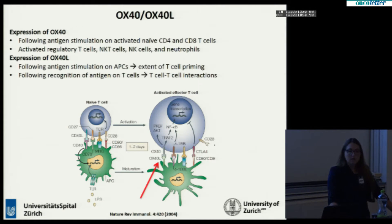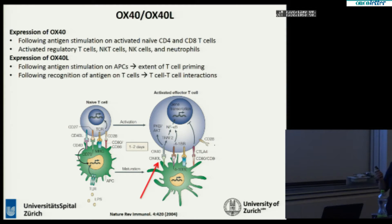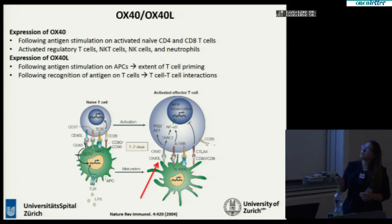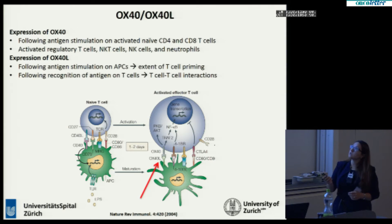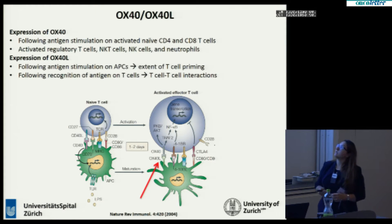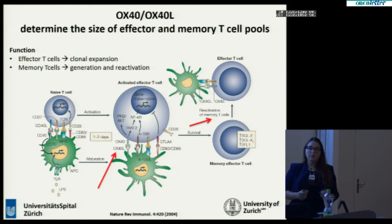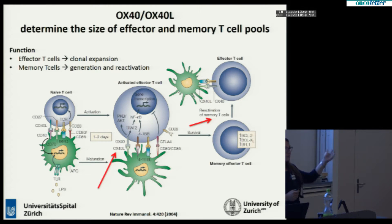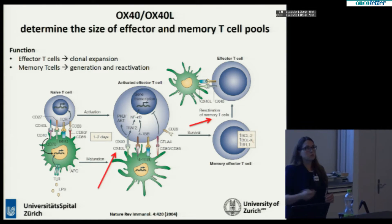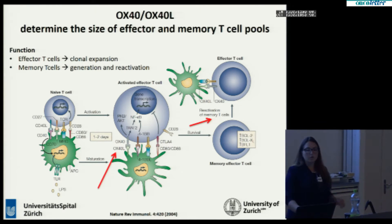The expression of OX40 ligand is found upon antigen stimulation on the naive CD4 and CD8 T cells, but also on the regulatory T cells. The expression of the ligand itself is on APCs, and after recognition of the antigen on the T cell, for the T cell-T cell interaction. The function on the effector T cells will be clonal expansion — the first phase — and on the memory T cells, reactivation, the third phase of the T cell response.